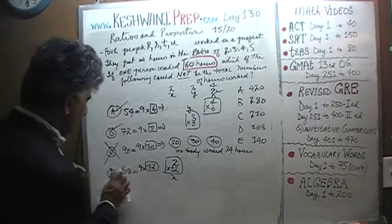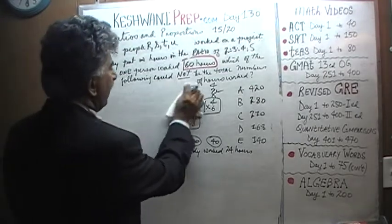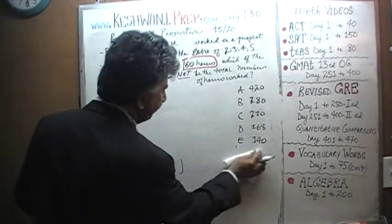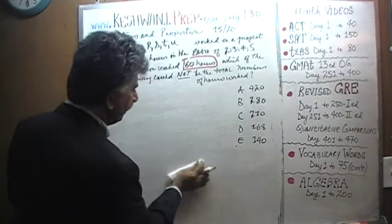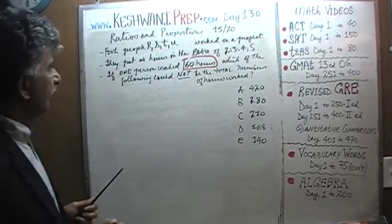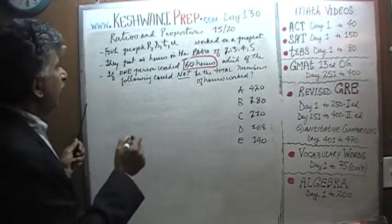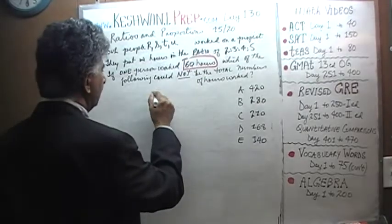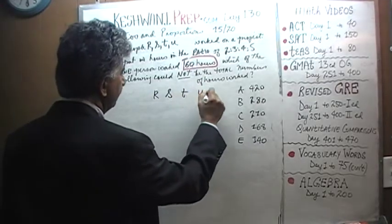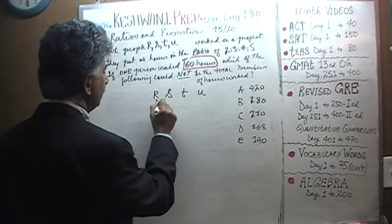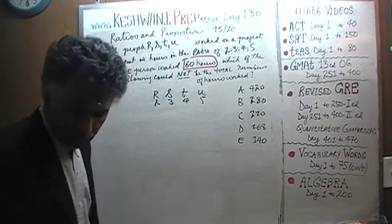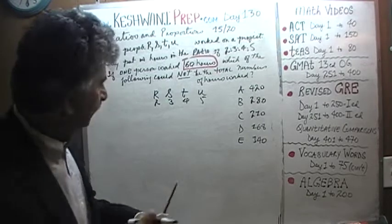I should have raised this earlier — I forgot. This is the work from yesterday. This is how the problem looks like. So let's get going. We have 4 people R, S, T and U, and we know that they work in the ratio of 2 to 3 to 4 to 5.